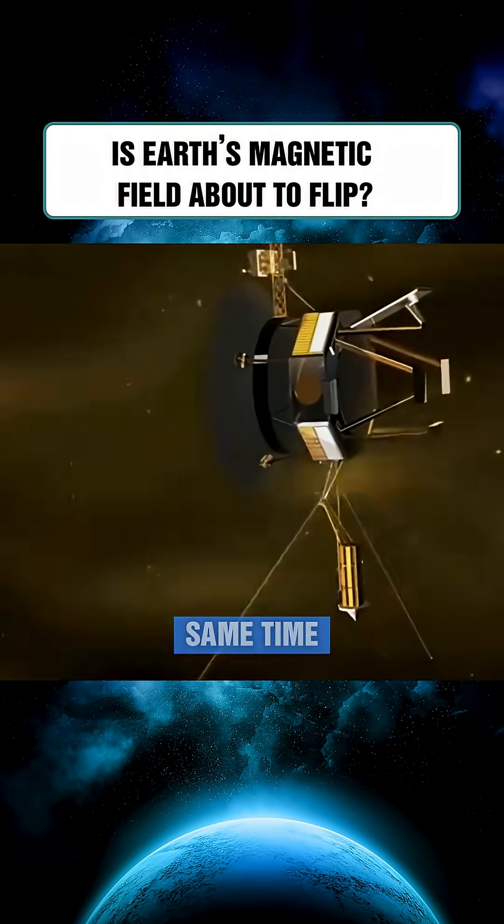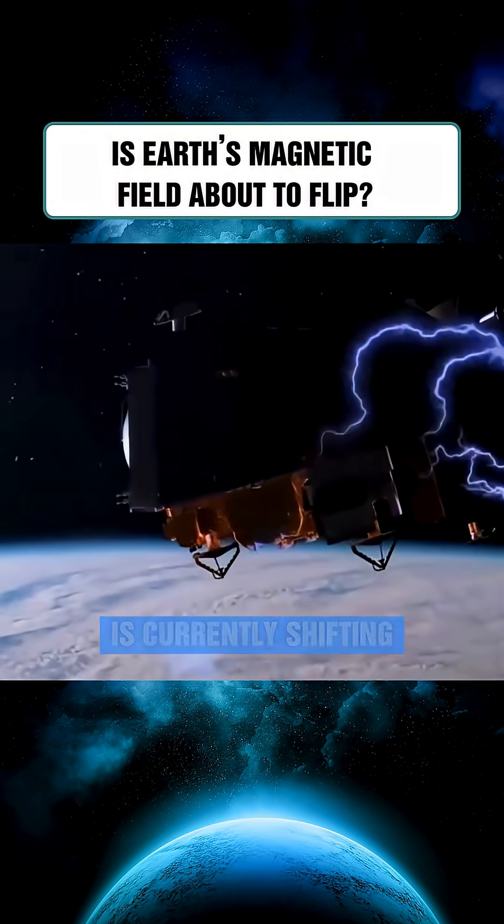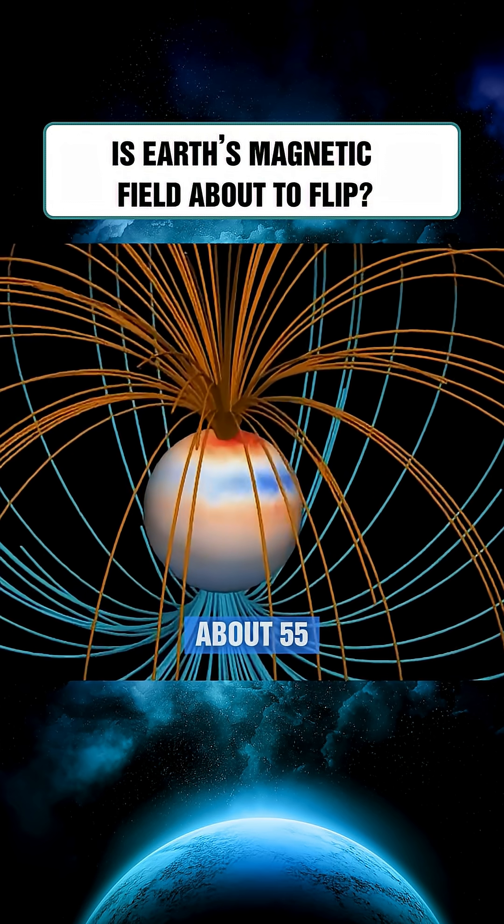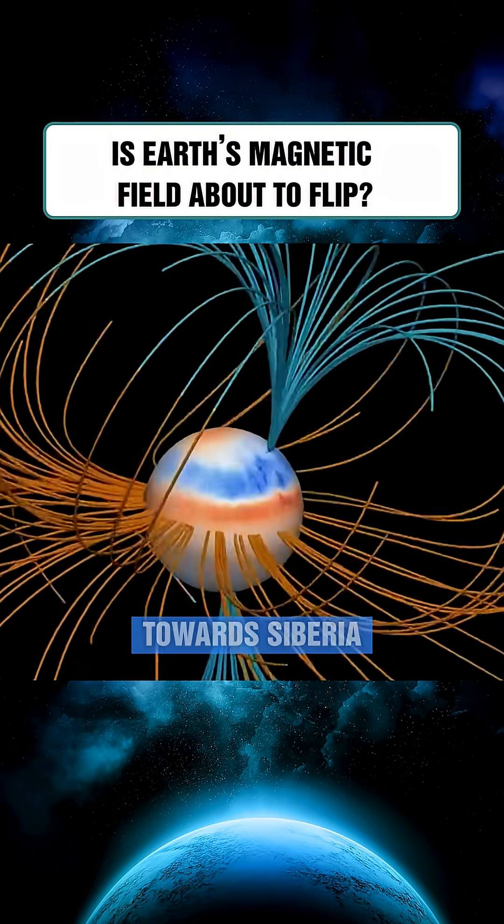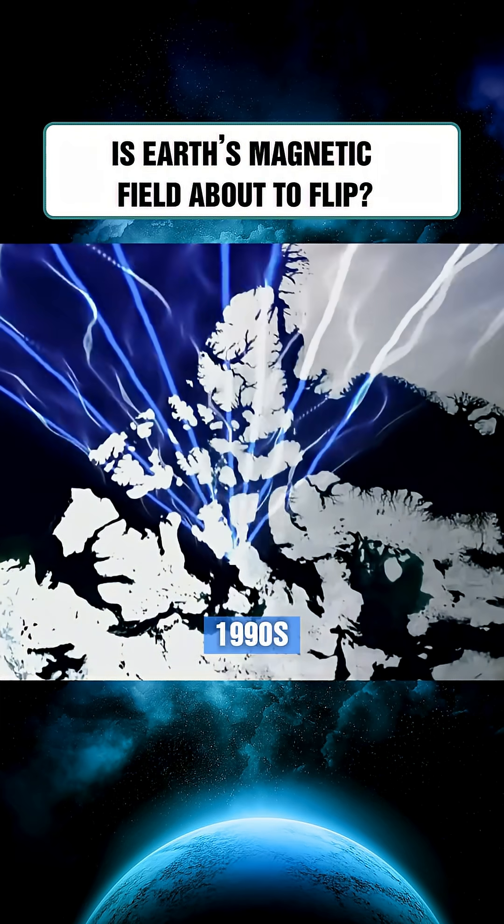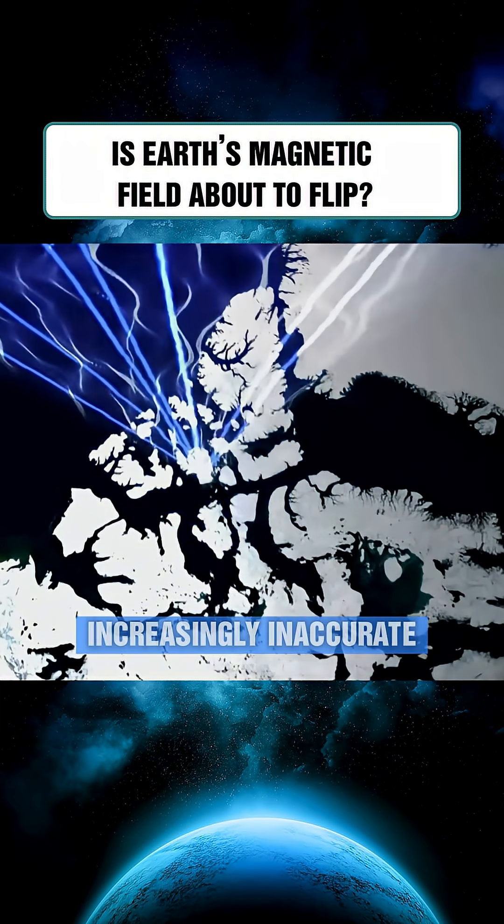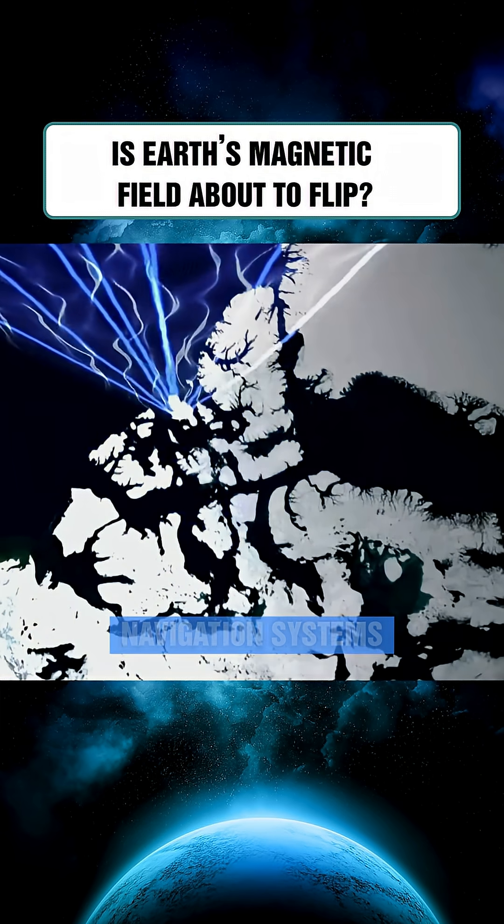At the same time, Earth's magnetic poles are drifting. The magnetic north pole is currently shifting at a rate of about 55 kilometers per year toward Siberia, three times faster than it moved in the 1990s. This drift is rendering traditional compasses increasingly inaccurate, affecting global navigation systems.